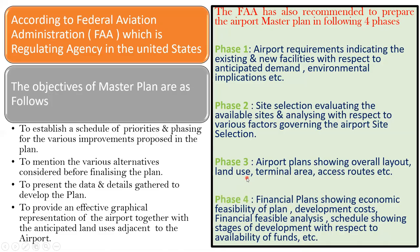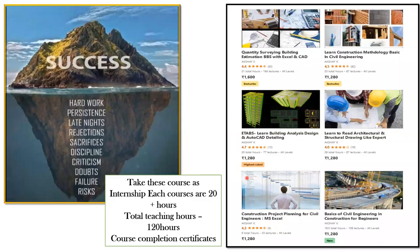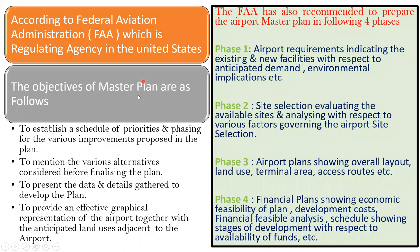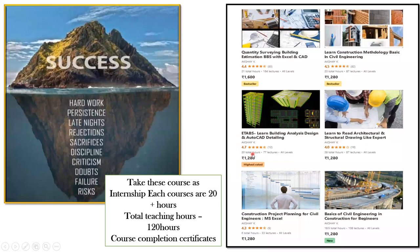I hope you have got an idea about the master plan — how it has to be understood, how a master plan looks, and what all things will be given in it, right from the runway to the taxiway to the terminal buildings. The FAA has four objectives and we have understood those. Whenever we try to do the airport master plan, these are the four phases — phase one, two, three, and four — based on which we carry out the master plan of an airport. We'll see you back in the next lecture.